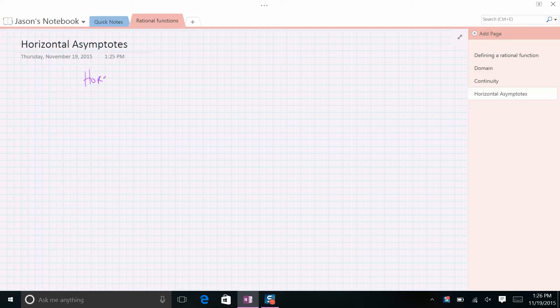Horizontal asymptotes of rational functions are essentially the end behavior of the function. So with polynomials, we know our end behavior either went up forever or down forever on the ends, right?